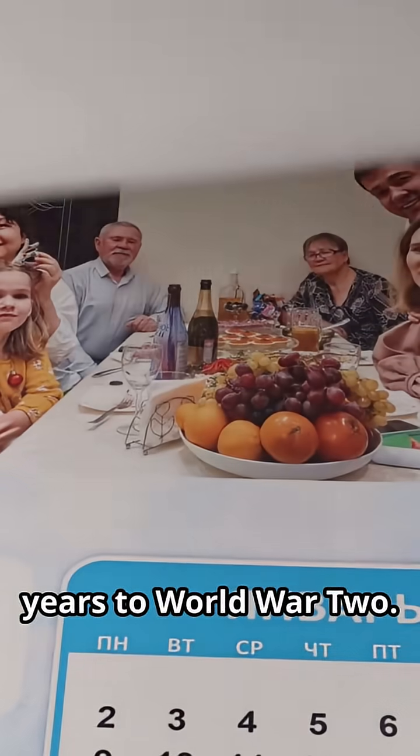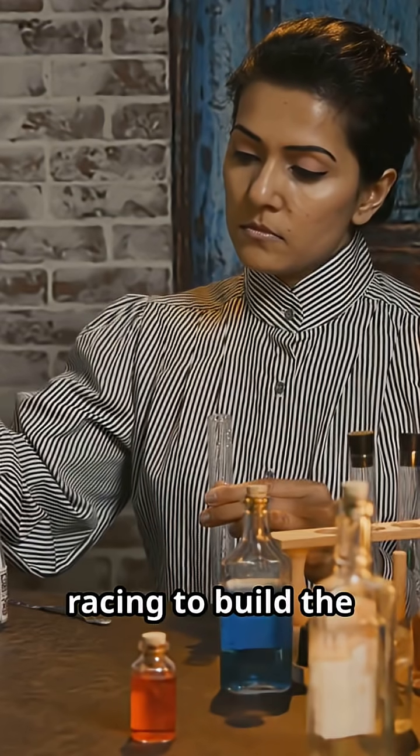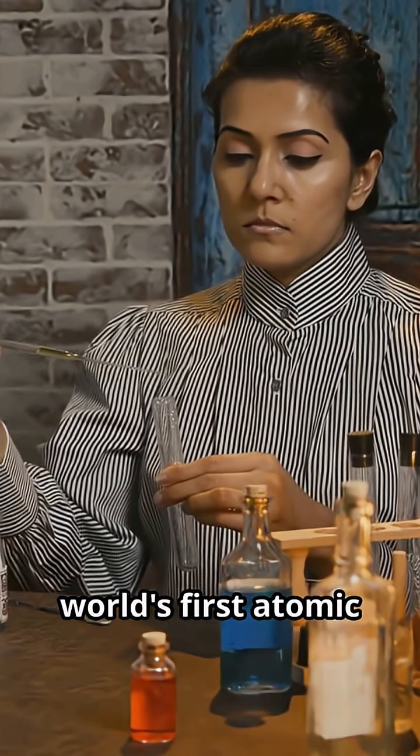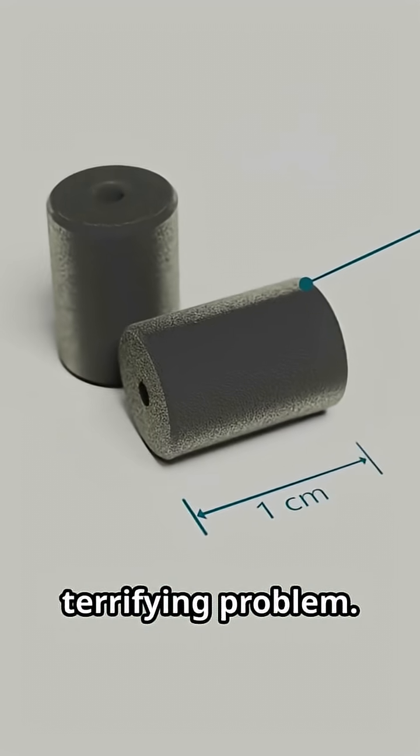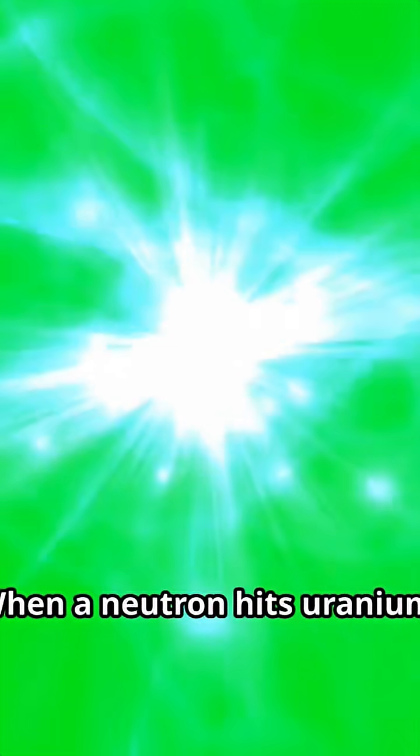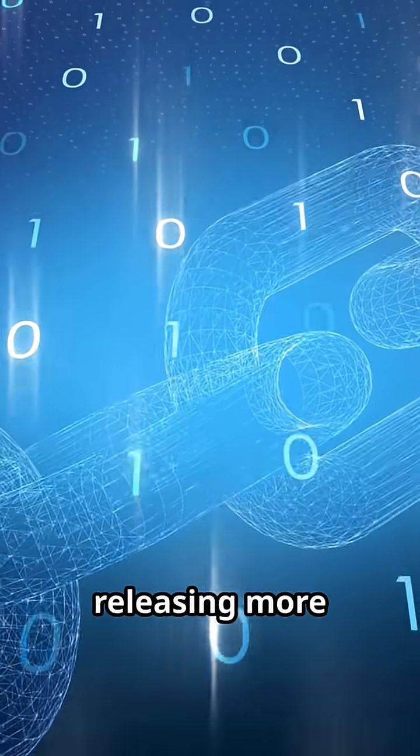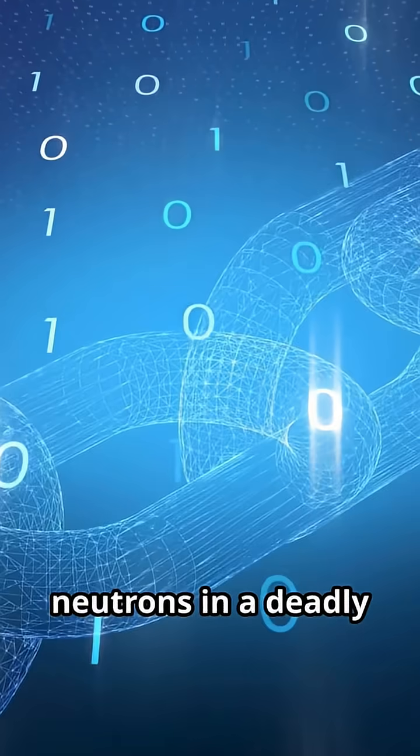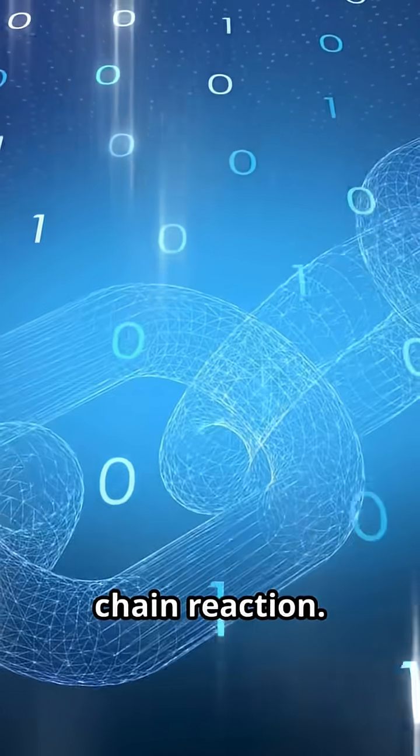Scientists are racing to build the world's first atomic bomb, but they have a terrifying problem. When a neutron hits uranium, it splits the atom, releasing more neutrons in a deadly chain reaction. But will the reaction sustain itself or fizzle out harmlessly?